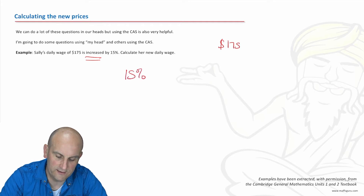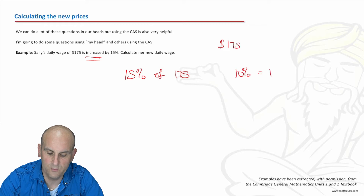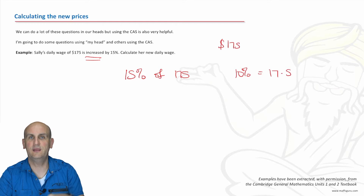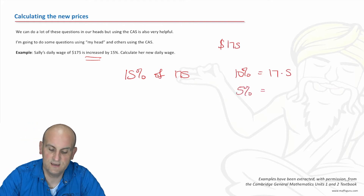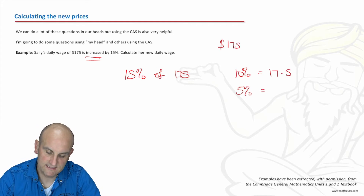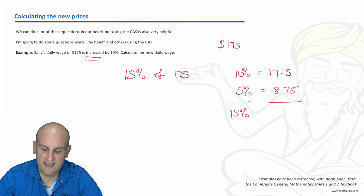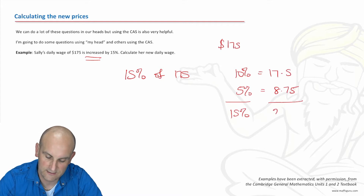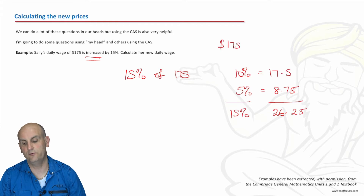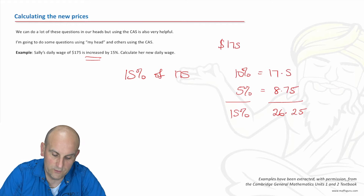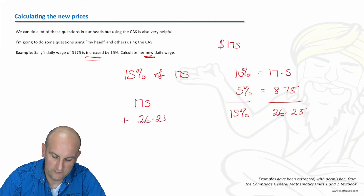So what I'm trying to do is work out 15% of $175. If I was going to do this mentally, the first thing I would do is work out 10%, which is simply 17.5. Then how would I get 15%? Well, 10% plus 5% gives me 15%. So if I now work out 5%, I get half of 17.5, which is 8.75. How do I get 15%? I add them together: 17.5 plus 8.75 is 26.25. So her daily wage has increased by $26.25. Is that her final wage? No, because I now need to add that on. I take 175 and add 26.25, which gives $201.25.